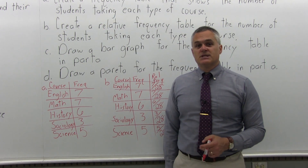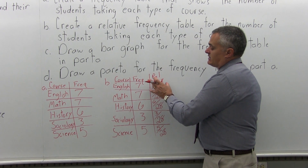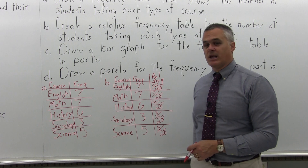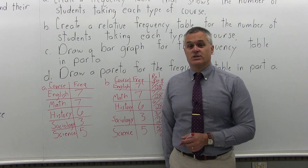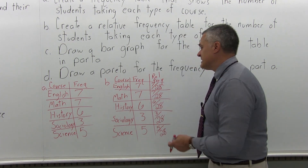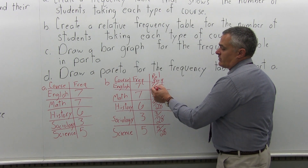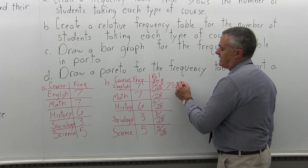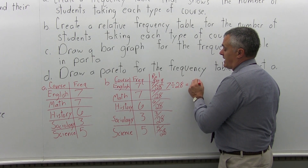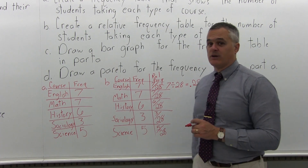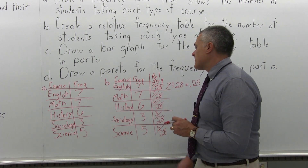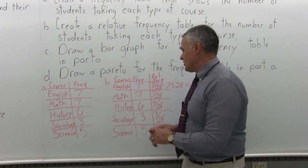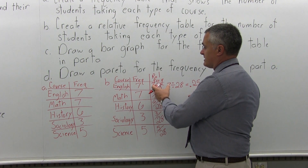The relative frequencies can be expressed as fractions. One advantage is you can more easily see if they add up to one — they'll add up to twenty-eight over twenty-eight, which is one. If you prefer decimals or percents, use your calculator. For example, English: seven divided by twenty-eight equals 0.25, or twenty-five percent. You can leave the fractions or convert them to decimals.